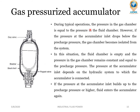A decrease in fluid pressure causes the gas to decompress and discharge the stored fluid into the system. During typical operation, the pressure in the gas chamber is equal to the pressure in the fluid chamber. However, if the pressure at the accumulator inlet drops below the pre-charged pressure, the gas chamber becomes isolated from the system. In this situation the fluid chamber is empty and the pressure in the gas chamber remains constant and equal to the pre-charged pressure. When the inlet pressure builds back up to the pre-charged pressure or higher, fluid enters the accumulator again.